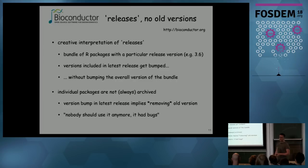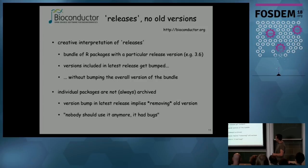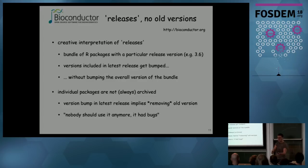Bioconductor — it's a bunch of R packages for doing bioinformatics. They have this concept of releases: a Bioconductor release gets a particular version number, and inside that are a bunch of R packages. Even though they have a version at the top level, they change the versions of the R packages inside without changing the 3.6 release number, so it stays 3.6 — it's like a moving target. And in a release, they throw away the old version because 'it had bugs, you shouldn't use it anymore.' So you can't reproduce it unless you give someone all the sources you downloaded.